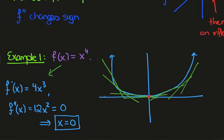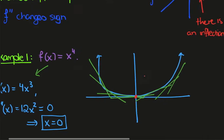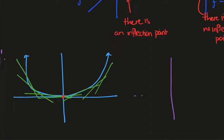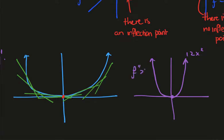If we graph the second derivative — so we graph 12x² — it looks like a very steep parabola and it does vanish at x equals 0. But here we see the second derivative is positive to the left, and here we also see the second derivative is positive to the right. So there's no change of sign.